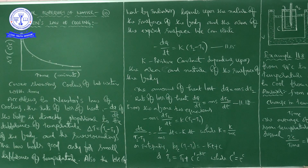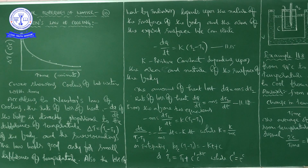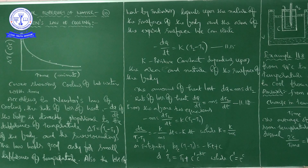For small temperature differences, the rate of cooling due to conduction, convection, and radiation combined is proportional to the difference in temperature. Newton's Law is a valid approximation in applications such as the transfer of heat from a radiator to a room, loss of heat through the walls of a room, or the cooling of a cup of tea on the table.